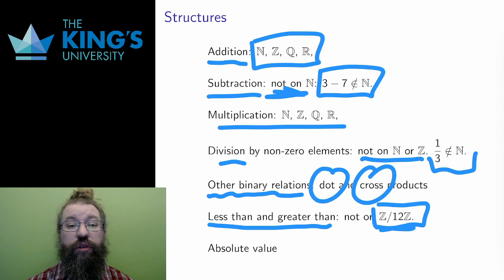Absolute value is another structure on several of these sets, although it doesn't really do anything on the natural numbers, since everything there is positive.